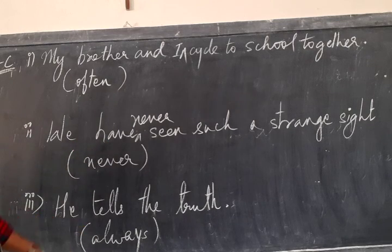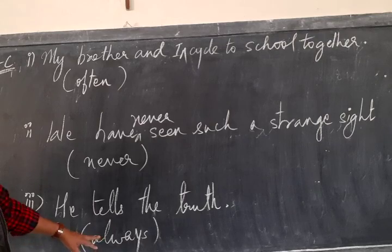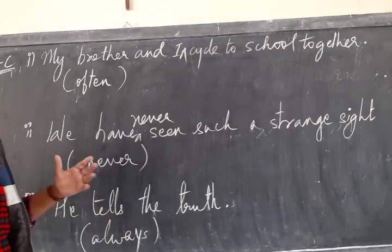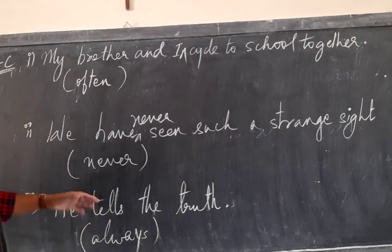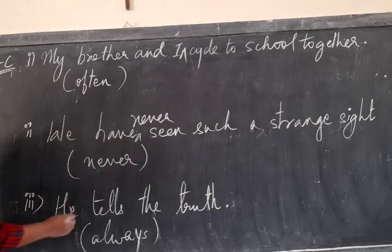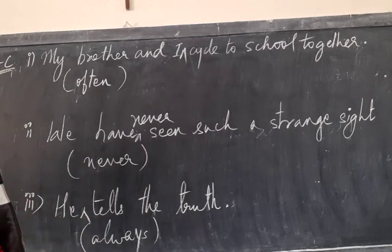Question number three. He tells the truth. We have already seen that where do we use always, ever and never. Always, never goes in the first position. So always will be after the subject. He always tells the truth. So this is how you are going to do all these three exercises.